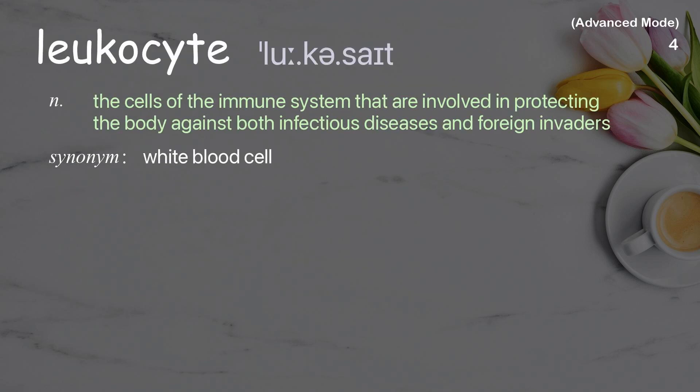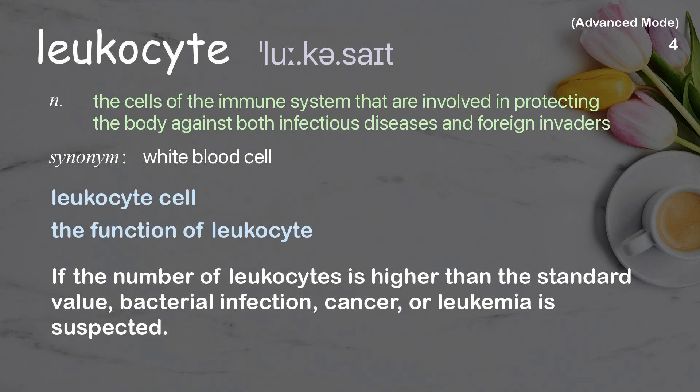Leukocyte. The cells of the immune system that are involved in protecting the body against both infectious diseases and foreign invaders. Examples: leukocyte cell; the function of leukocyte. If the number of leukocytes is higher than the standard value, bacterial infection, cancer, or leukemia is suspected.